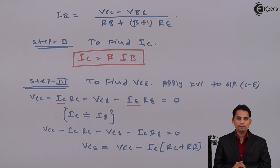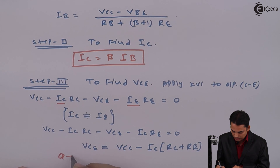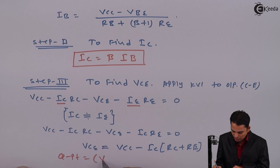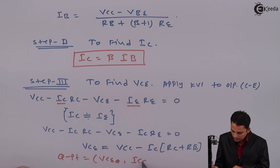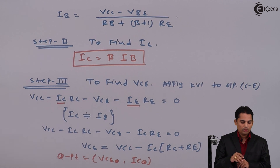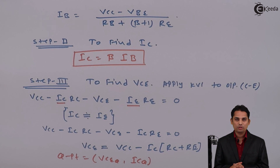From Step 3 we have obtained the voltage between collector and emitter. Our Q-point is defined as (VCEQ, ICQ). By performing this analysis we have obtained the Q-point for the modified fixed bias circuit. Thank you.